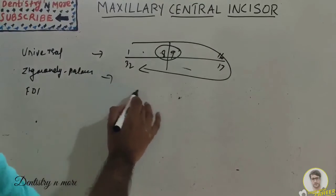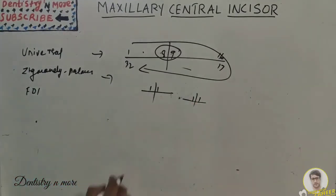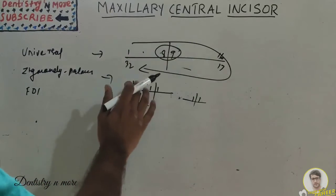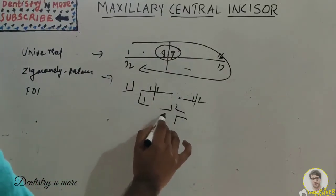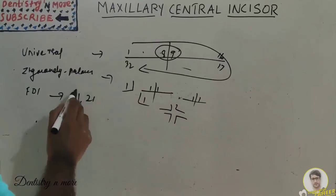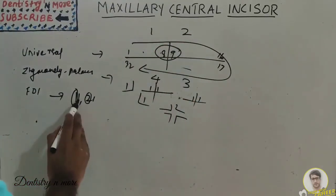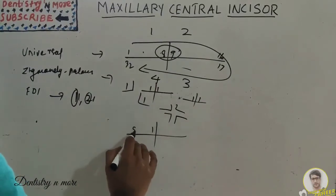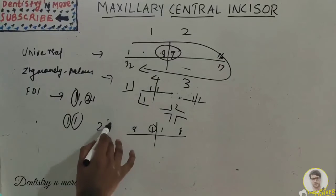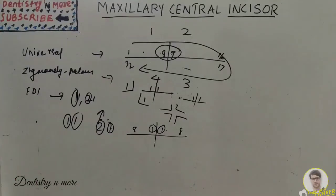In the Zsigmondy-Palmer system, a quadrant-based approach is used, so the central incisor is simply noted as '1|1', dividing the 32 teeth into quadrants. In the FDI system, a two-digit format is used: the first digit indicates the quadrant and the second indicates the tooth. So '11' means the first quadrant, first tooth (right maxillary central incisor), and '21' means the second quadrant, first tooth (left maxillary central incisor).